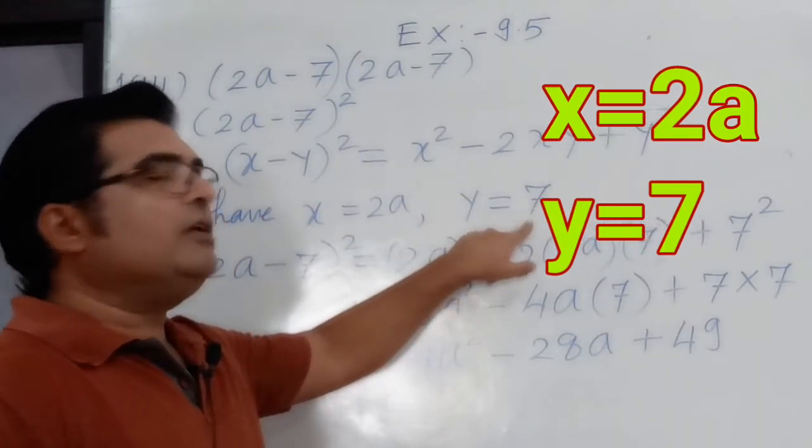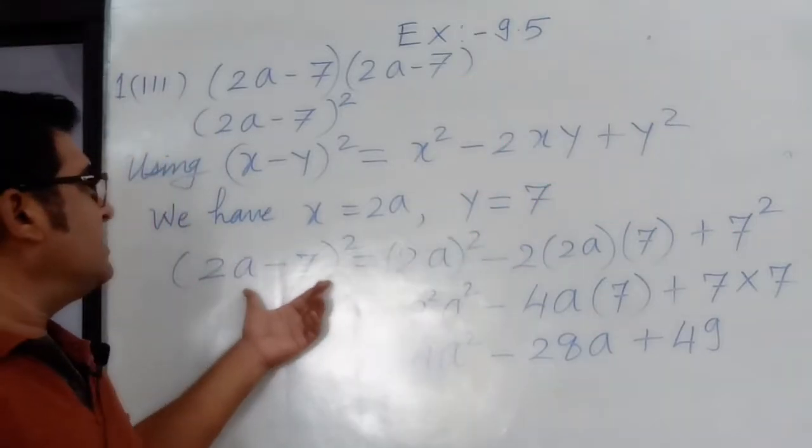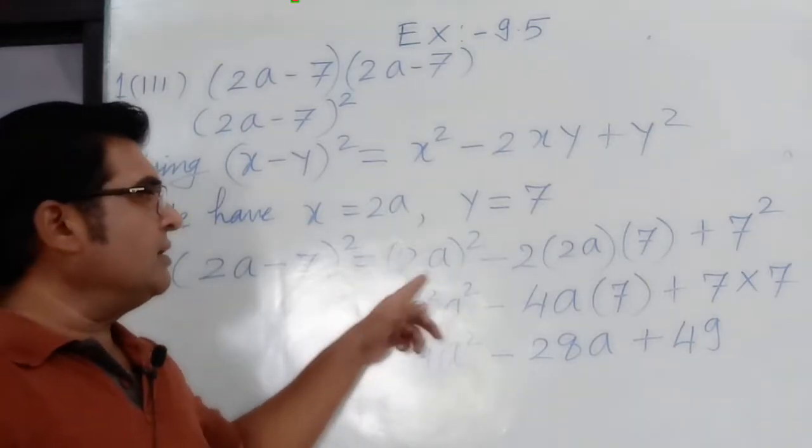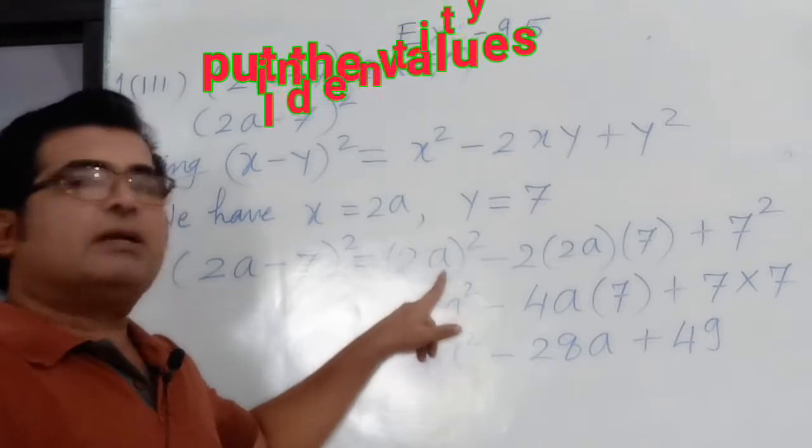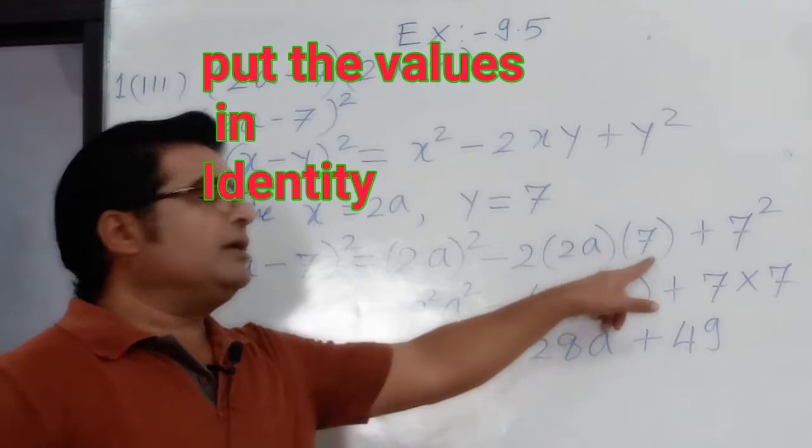So (2a - 7) the whole square equal to (2a) the whole square—bracket is necessary because we have numerals as well as variables—minus 2 into 2a into 7 plus 7 square.